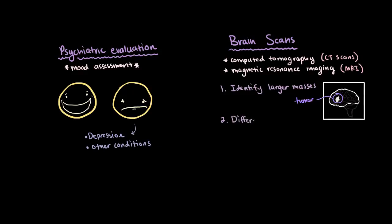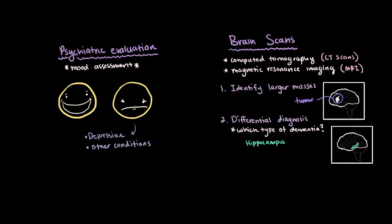But it might also help in making a differential diagnosis, meaning that we'll try to look to figure out what type of dementia is at play. Sometimes by looking at where the most atrophy of brain tissue is localized, we can figure out what type of dementia it is. For example, atrophy that's localized to the hippocampus might suggest Alzheimer's disease, or the frontal lobe might suggest frontotemporal dementia, or vascular pathologies that are visualized might suggest vascular dementia.